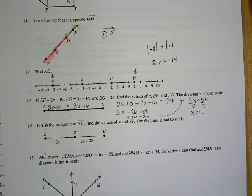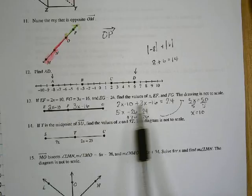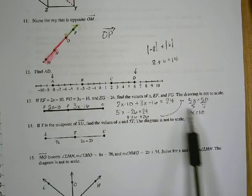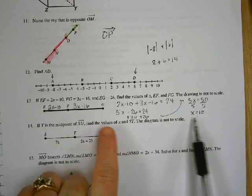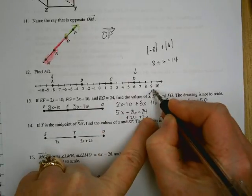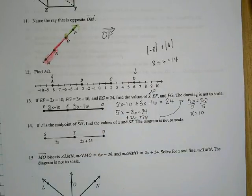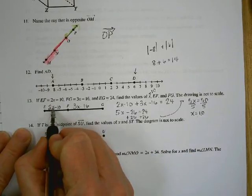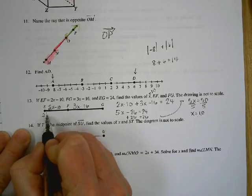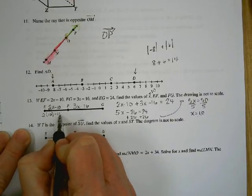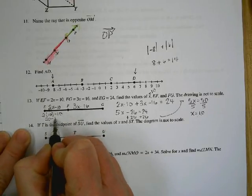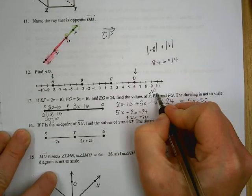Picking up on number 13. We set these equal to 24 and found out that x was 10. They asked me to find the value of x and also the length of EF. So I'm going to put 10 in place of x here: 2 times 10 minus 10, which is 20 minus 10, equals 10. So EF is 10.